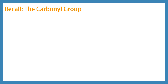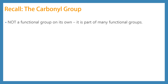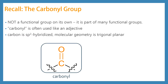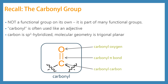I want you to recall the carbonyl group. The carbonyl group is not really a functional group on its own, but it is part of many different functional groups. We tend to use the word carbonyl a lot like an adjective. The carbon is sp2 hybridized, and the molecular geometry of the carbonyl group is trigonal planar. We can say carbonyl oxygen, carbonyl pi bond, or the carbonyl carbon — all of these are valid ways to use the word carbonyl.